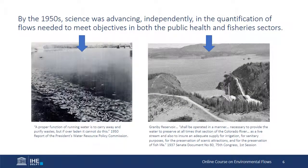By the 1950s, flow science related to both public health and fisheries had advanced significantly, but largely independent of one another. The applications of new knowledge were also spreading around the world at very different paces and levels of success. The strong and universal interest in public health caused this form of flow protection to spread rapidly. The volumes recommended were generally quite small with very little opposition to implementation. As seen in Shebley's report, there was opposition to fisheries-related flow releases from the beginning, slowing progress in both public policy and on-the-ground implementation.